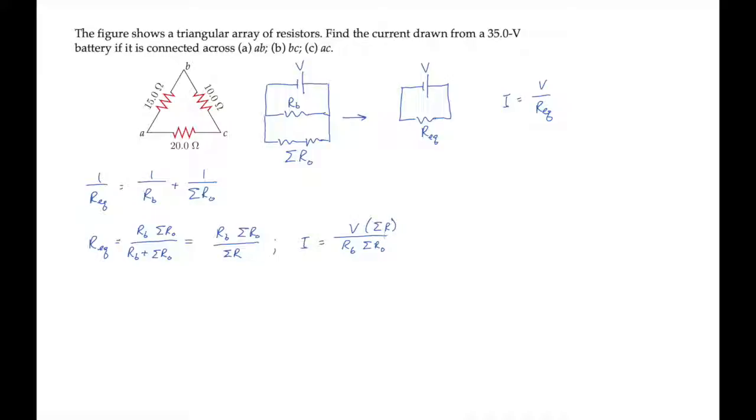Notice here that the values in the numerator are constant. The battery voltage is 35 volts and the sum of all the resistances is 45 ohms. So that gives us 1575 volt ohms divided by the product of the resistance across the battery times the sum of the other resistances.